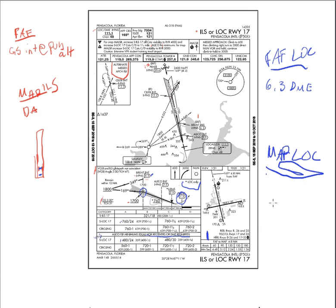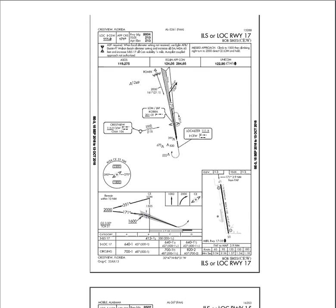We just saw we have a paired DME, and we can use that for our final approach fix. If we go over to Crestview, runway 17 localizer — I'm just going to be talking about the localizer — how do we identify this final approach fix? We have this Cobra LOM, the outer marker there, and it has a symbol for an NDB, which I'm not going to get too much into. What we can see is we don't have a paired DME. We don't have DME at all if you look at the profile view. So we have to use this outer marker to identify the final approach fix for the localizer.